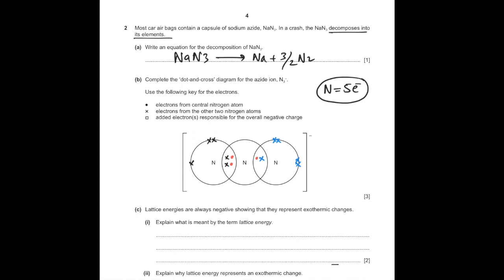Completing the azide ion structure: the terminal nitrogen initially has 7 electrons and requires one more — an extra electron is added, giving the −1 charge. For the other terminal nitrogen, it has 6 electrons and requires 2 more, but nitrogen still has 2 lone pair electrons available, so it forms a dative bond. Both terminal nitrogens complete their octet and the middle nitrogen's octet is also complete. That gives the complete dot-and-cross structure for N₃⁻.